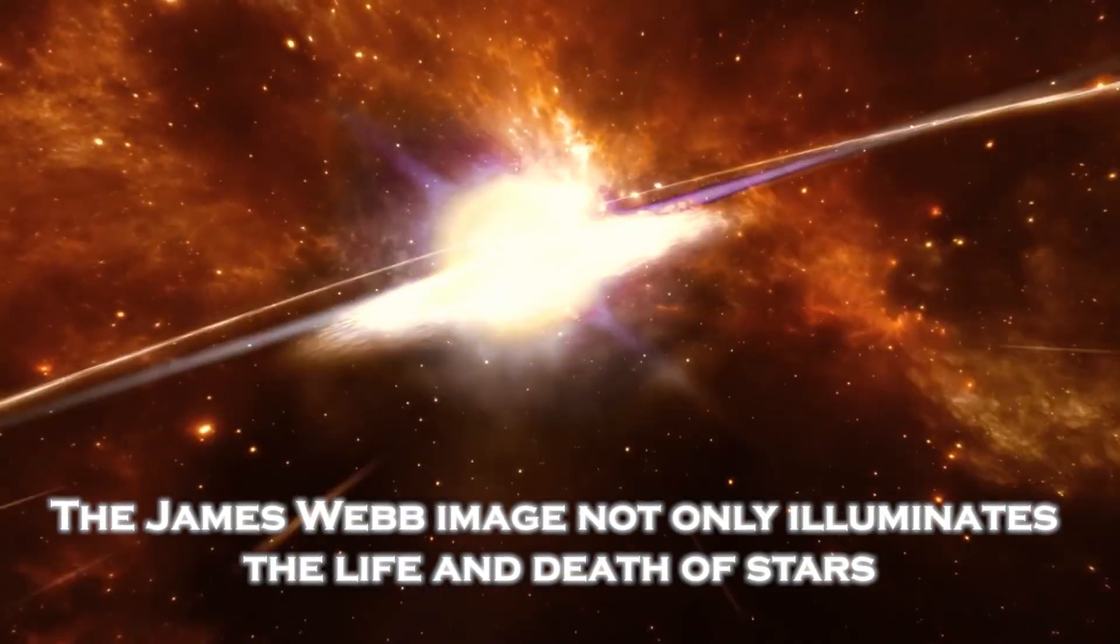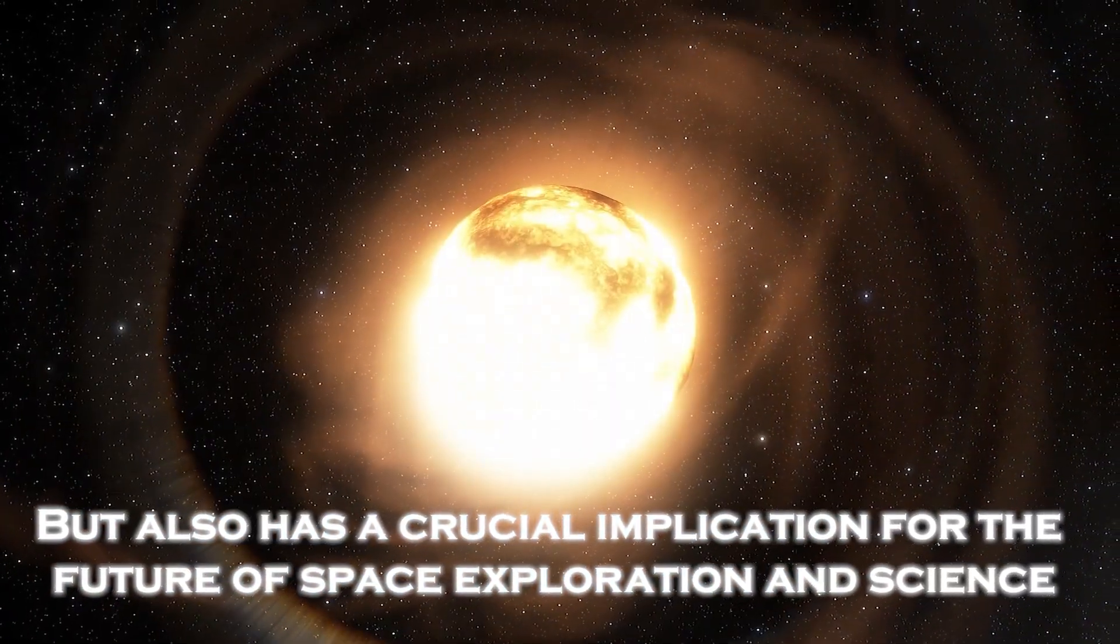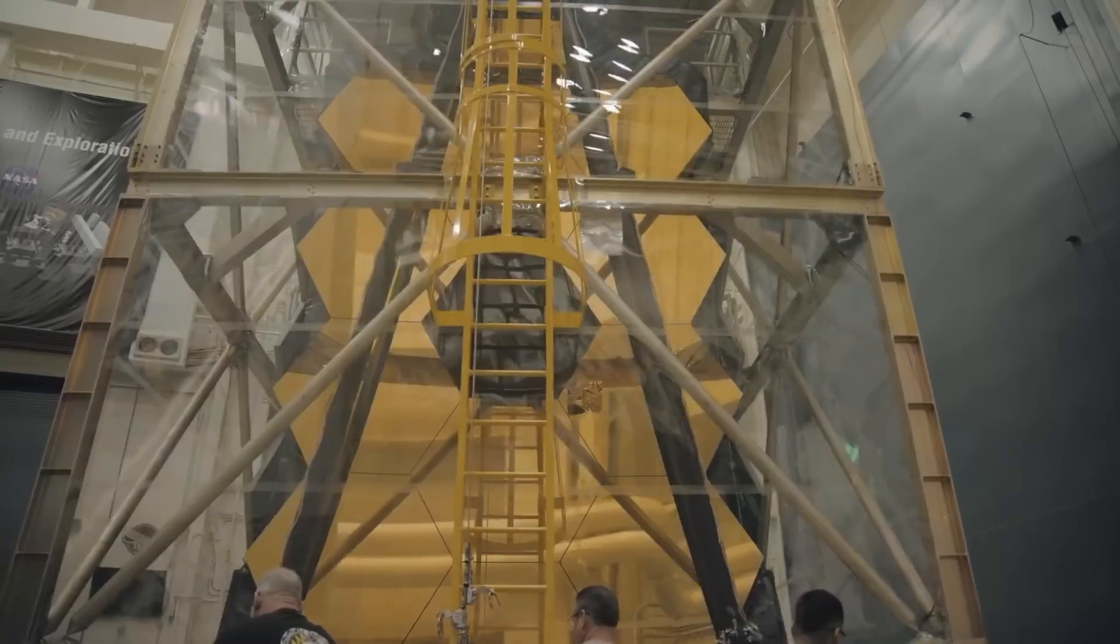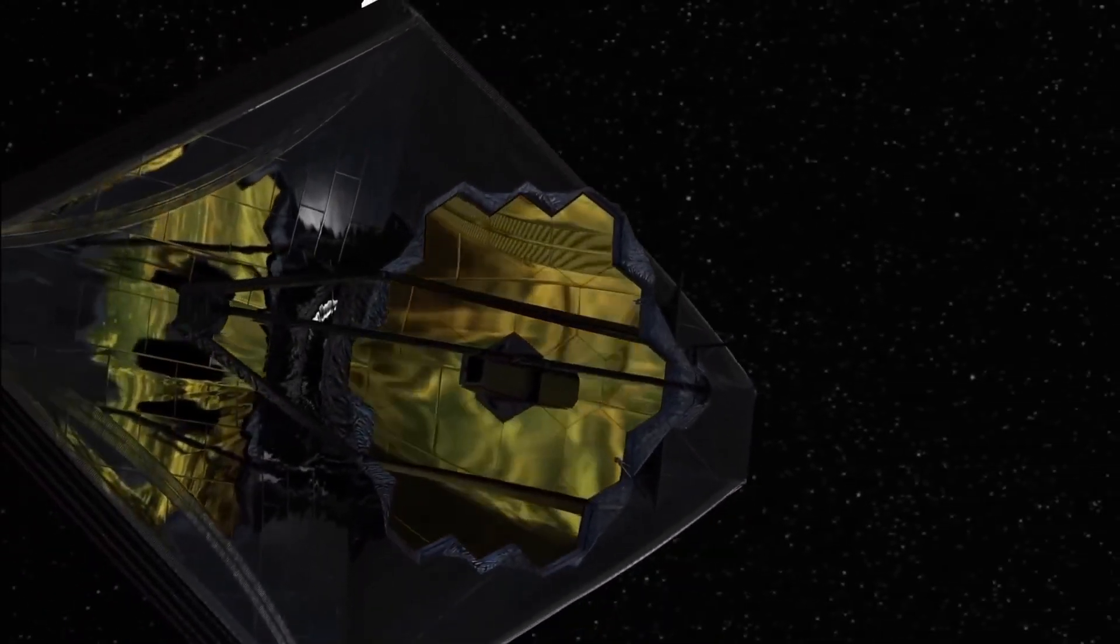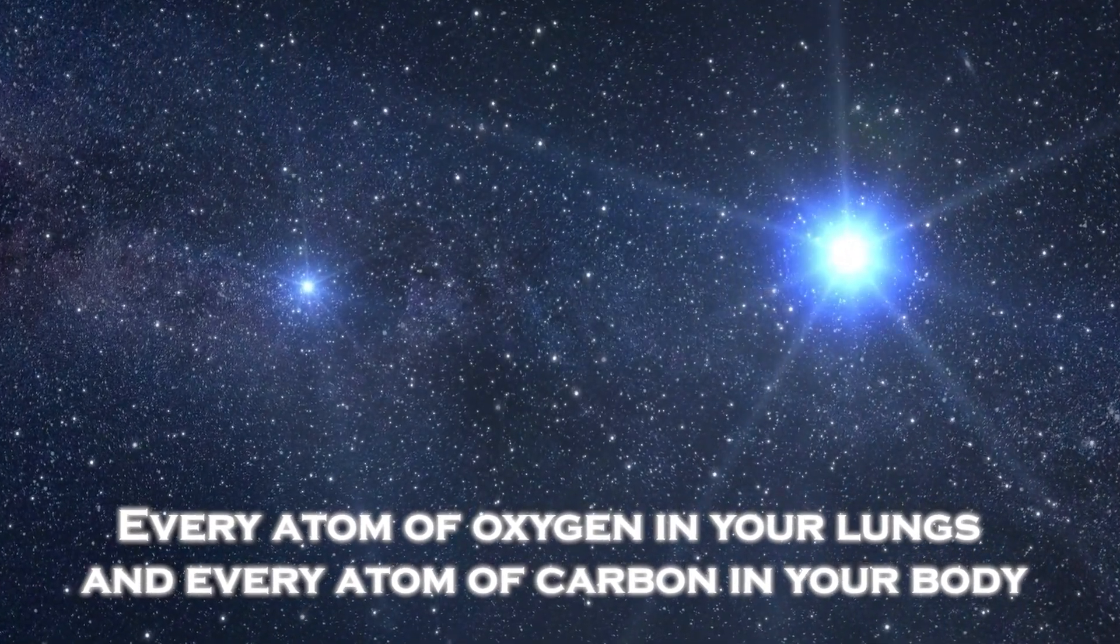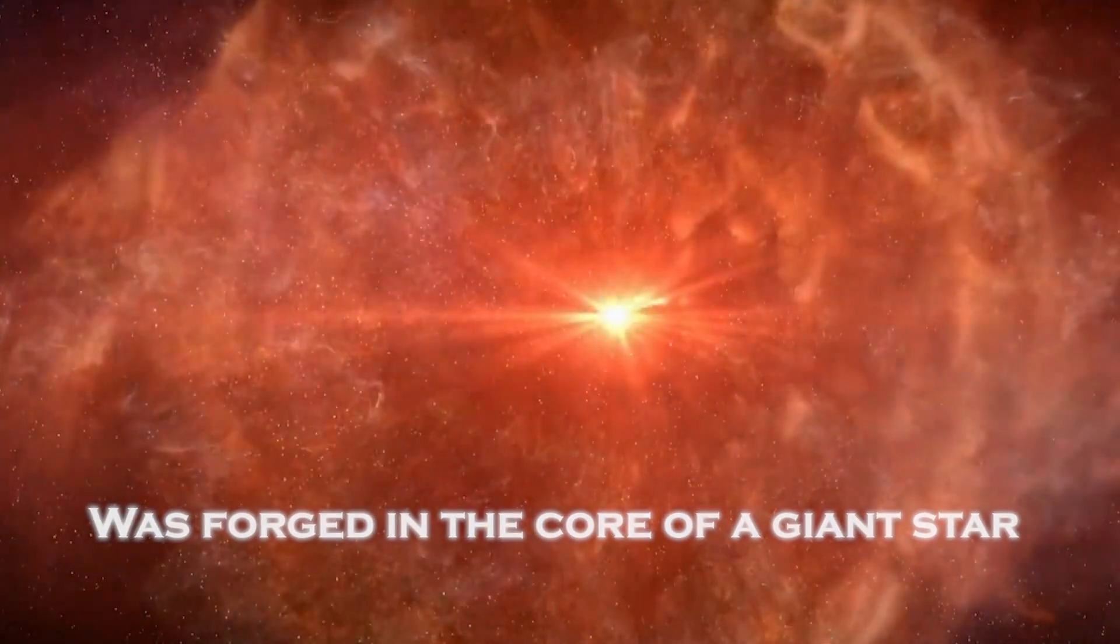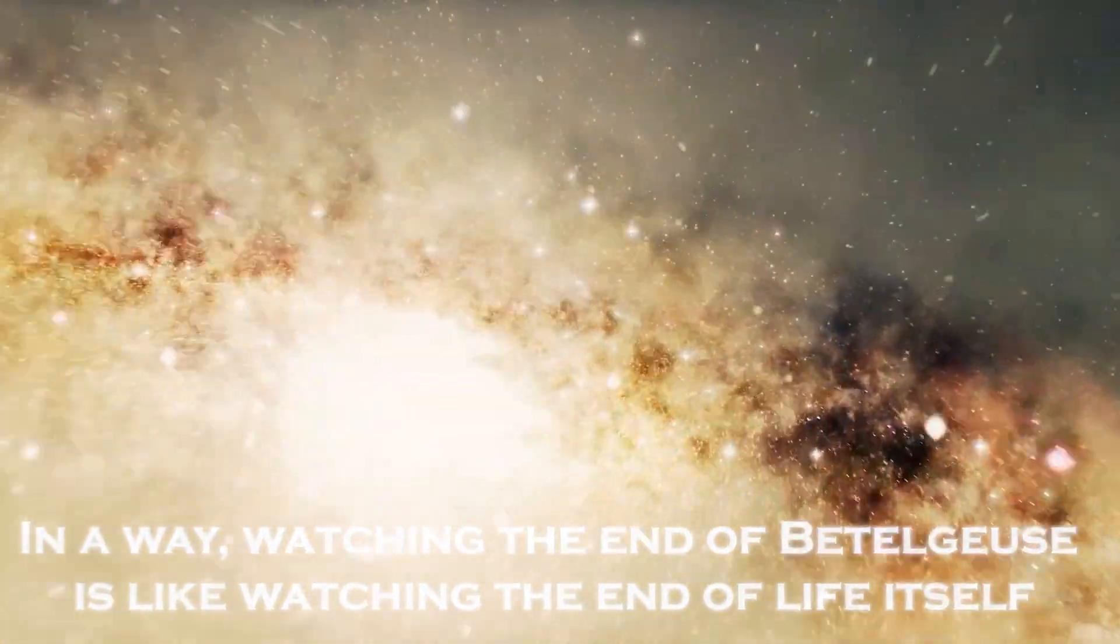The James Webb image not only illuminates the life and death of stars, but also has a crucial implication for the future of space exploration and science. Observing phenomena of this magnitude could reveal secrets about the formation of planetary systems and how the essential elements for life spread throughout the universe. In fact, much of the elements in our own solar system originated in stellar explosions of this type. Every atom of oxygen in our lungs and every atom of carbon in your body was forged in the core of a giant star. In a way, watching the end of Betelgeuse is like watching the end of life itself.